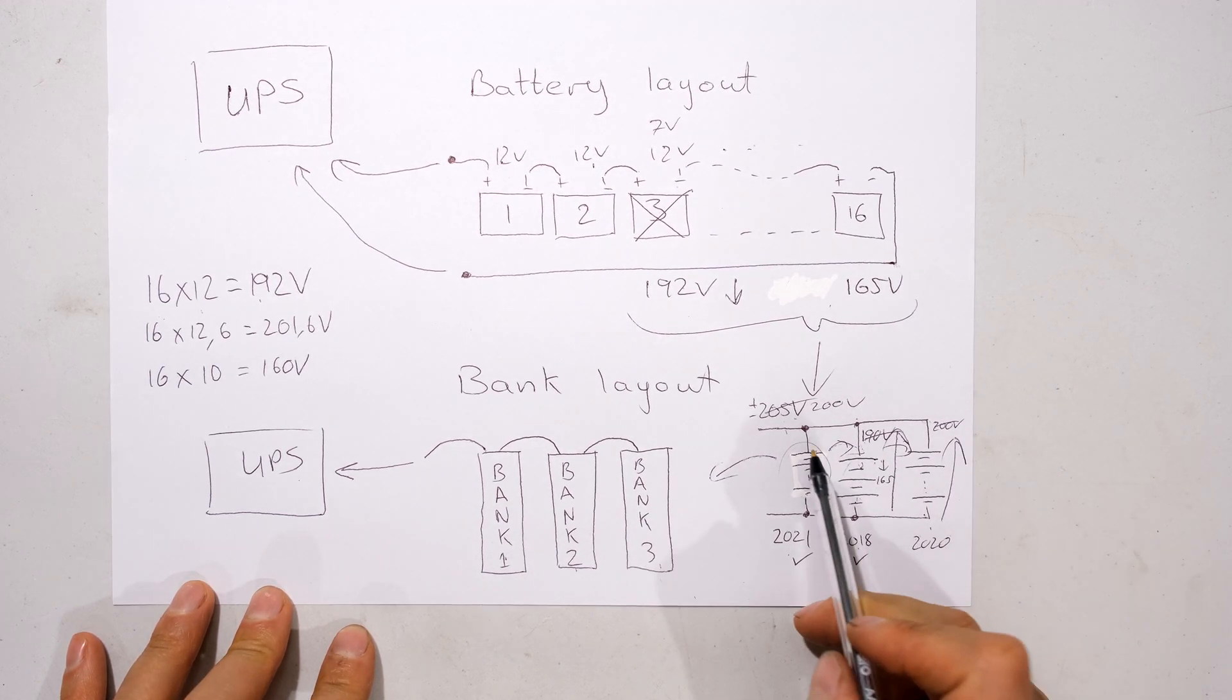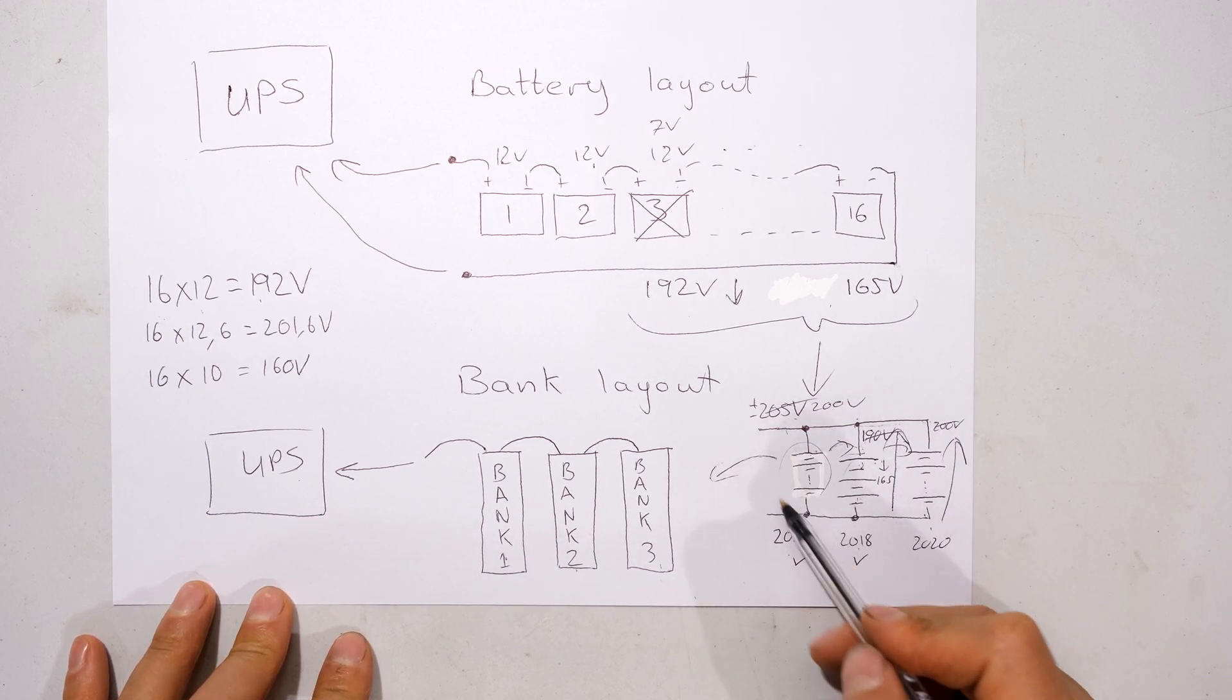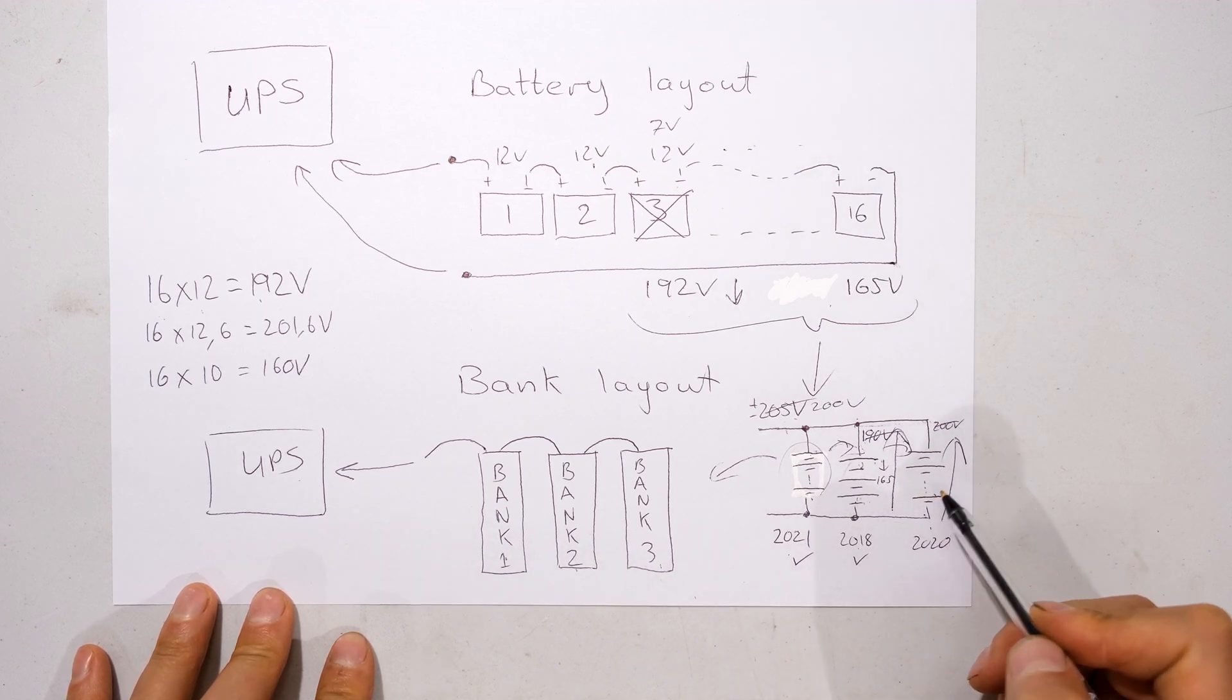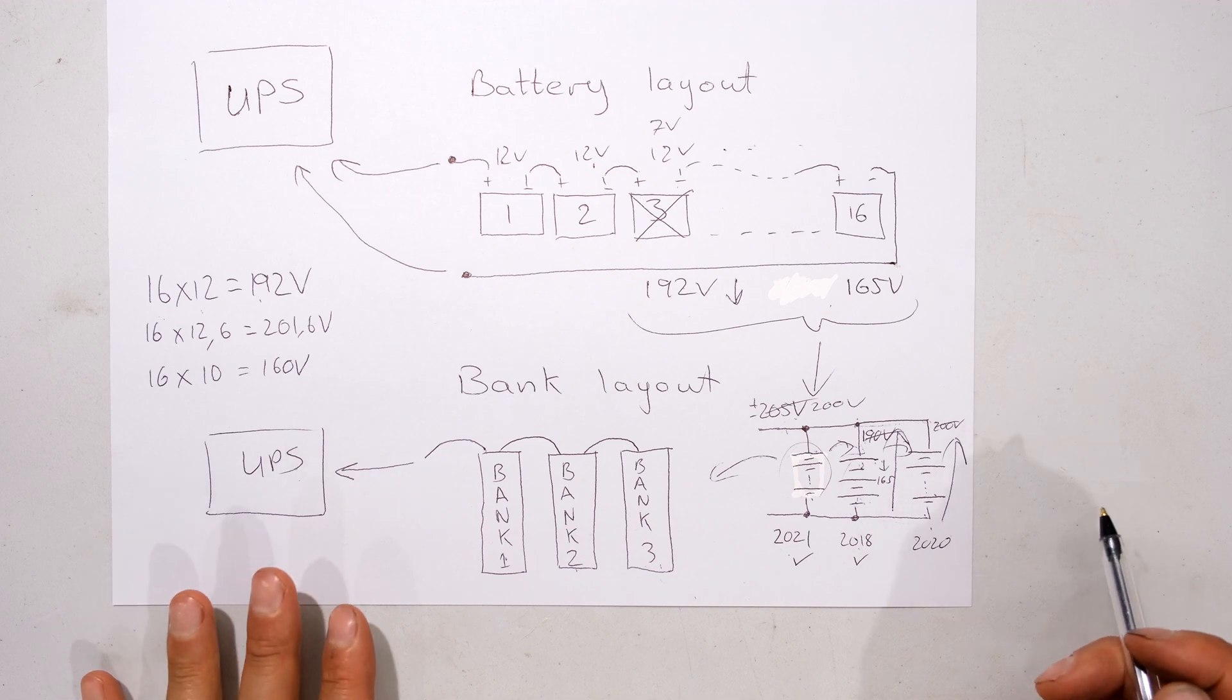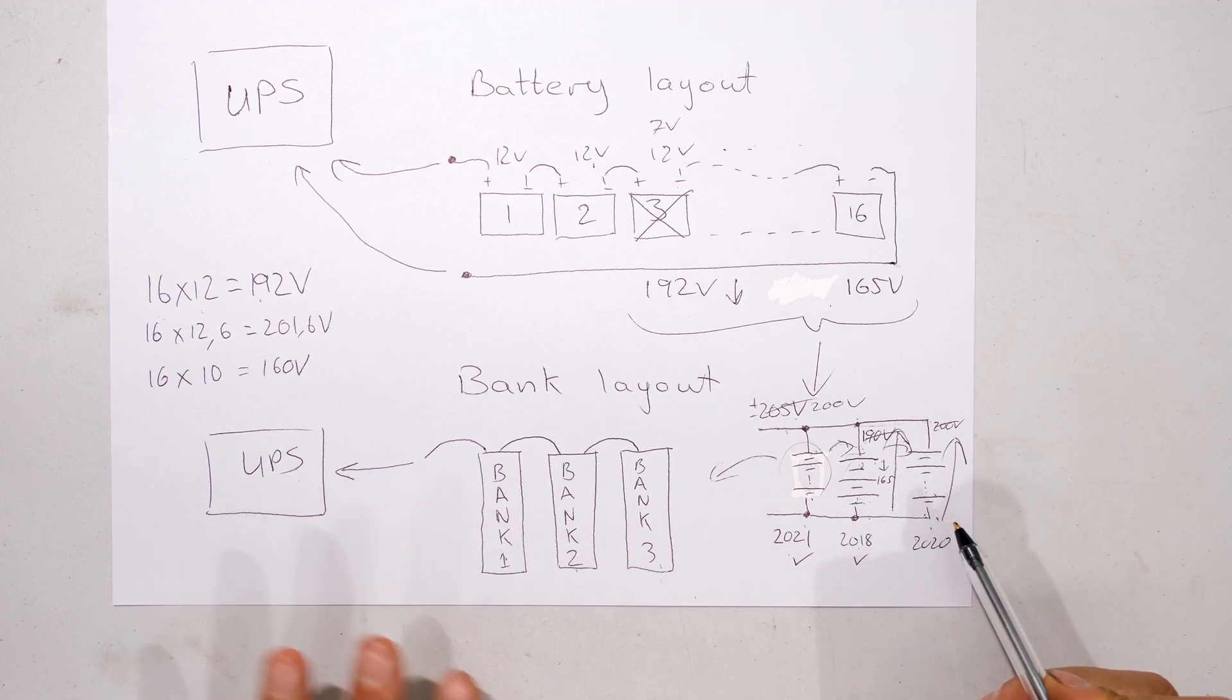Remember that this voltage here is the same throughout, so what you end up doing is you start depleting the brand new battery to compensate for the older batteries. What you're supposed to do is always change the battery banks at the same time. Don't have some old batteries with some new batteries.